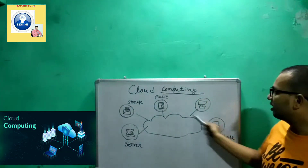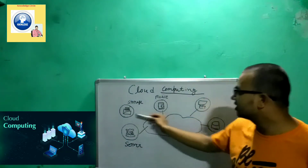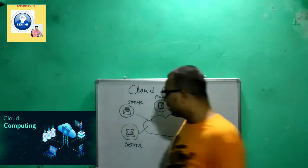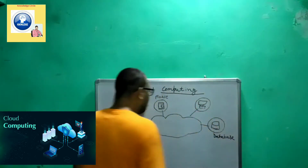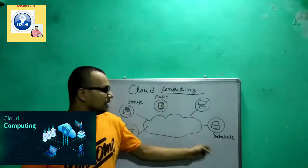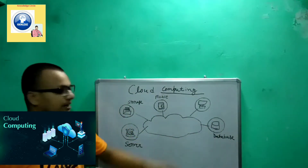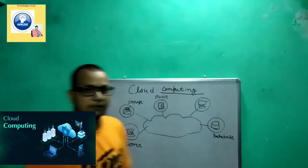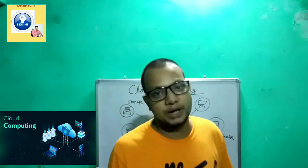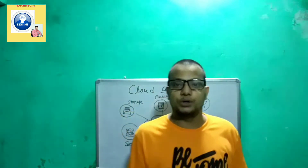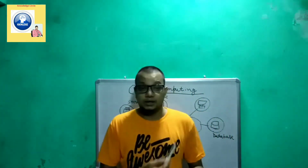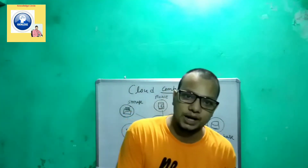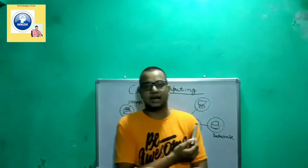Now, how does cloud come into computing? I have made a diagram of a cloud and how other things are connected with it. Cloud computing helps us in different ways — it connects us with databases, computers, phones, storage, and servers. Nowadays cloud computing is used everywhere. Let me give you a simple example which will help you understand it very easily.